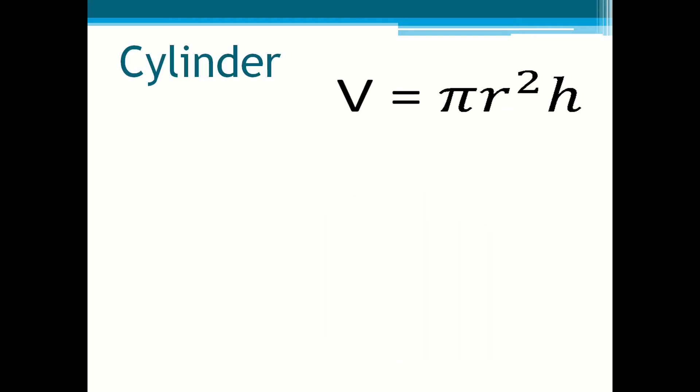Cylinders. V equals pi r squared h. V again for volume, R is for radius and H is for height.